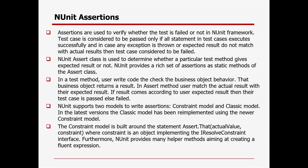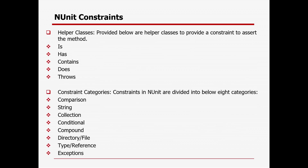The constraint model is built around the statement: Assert.That(actualValue, constraint), where the constraint is an object implementing the IResolveConstraint interface. NUnit provides many helper methods aiming at creating a fluent expression. The helper classes available include: Is, Has, Contains, Does, and Throws. Constraint categories in NUnit are primarily divided into eight categories: comparison, string, collection, conditional, compound, directory/file, type/reference, and exception constraints.